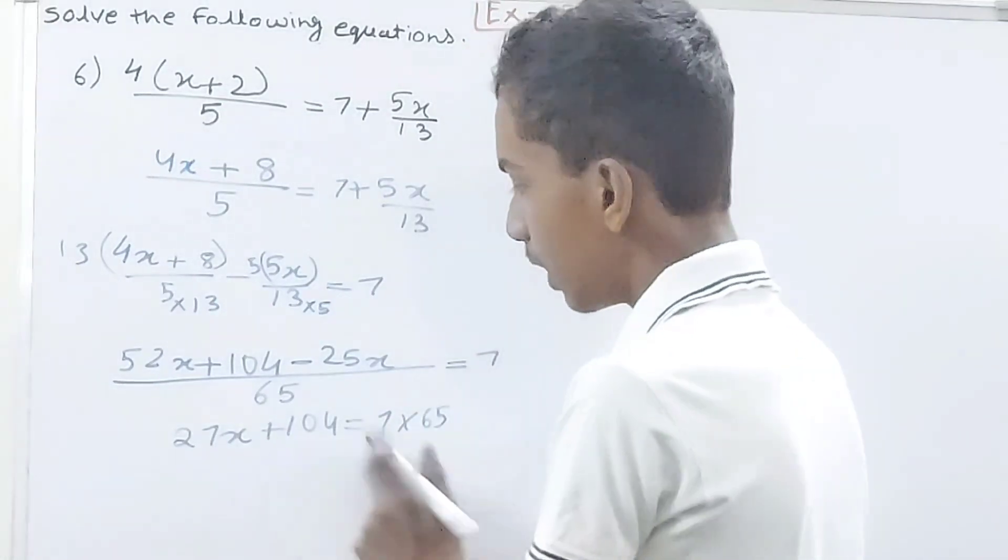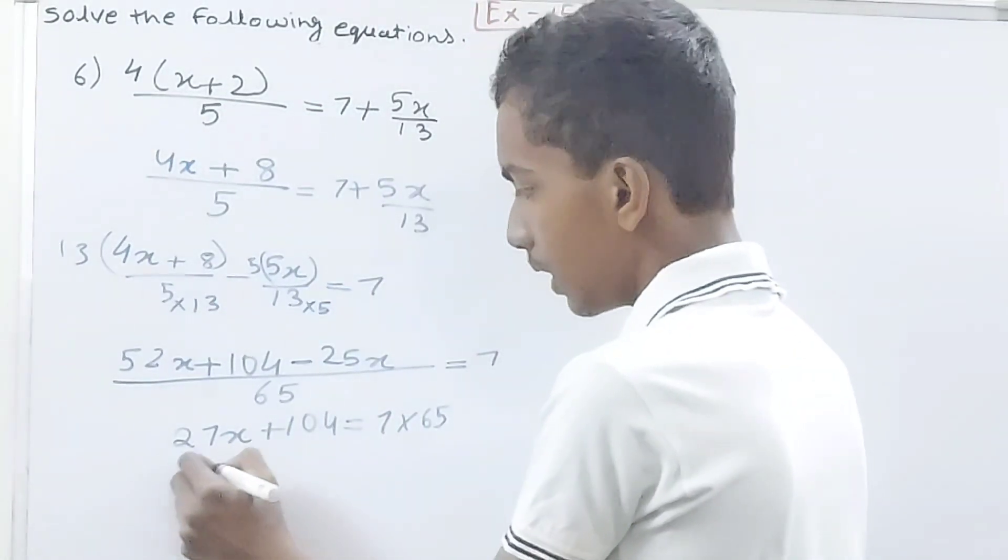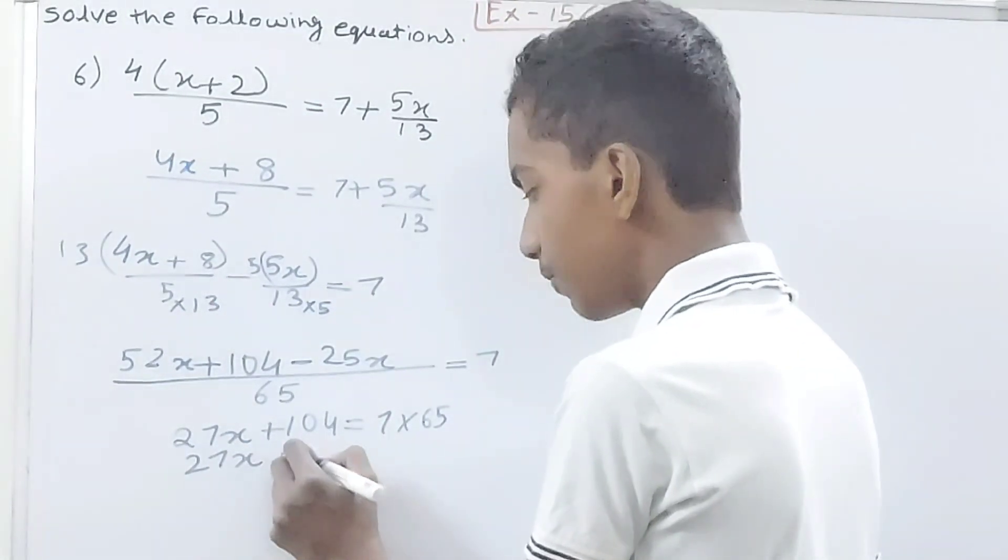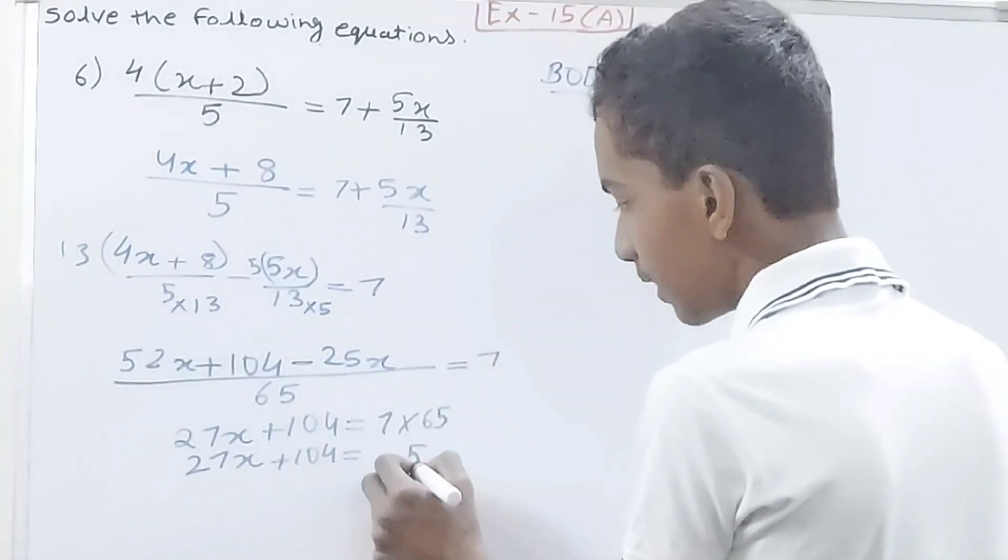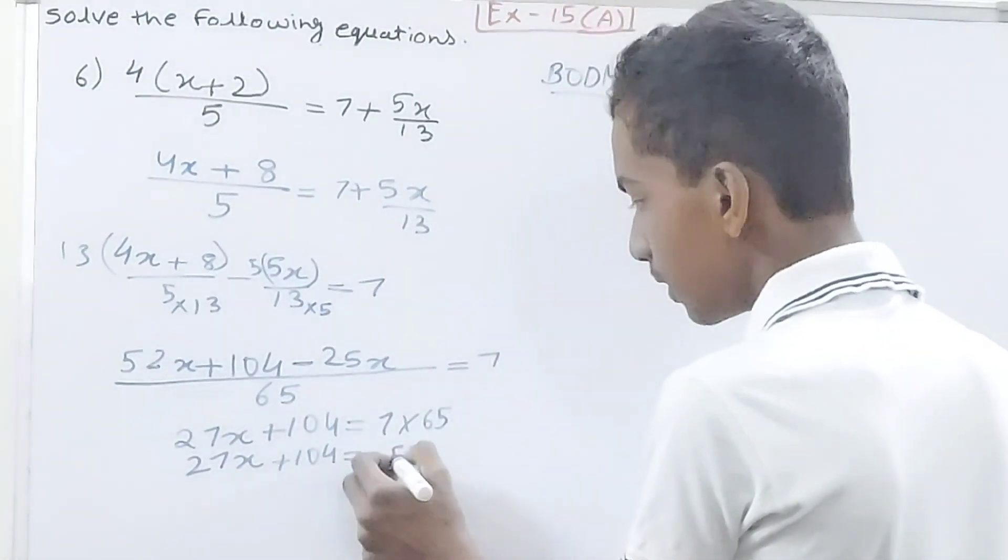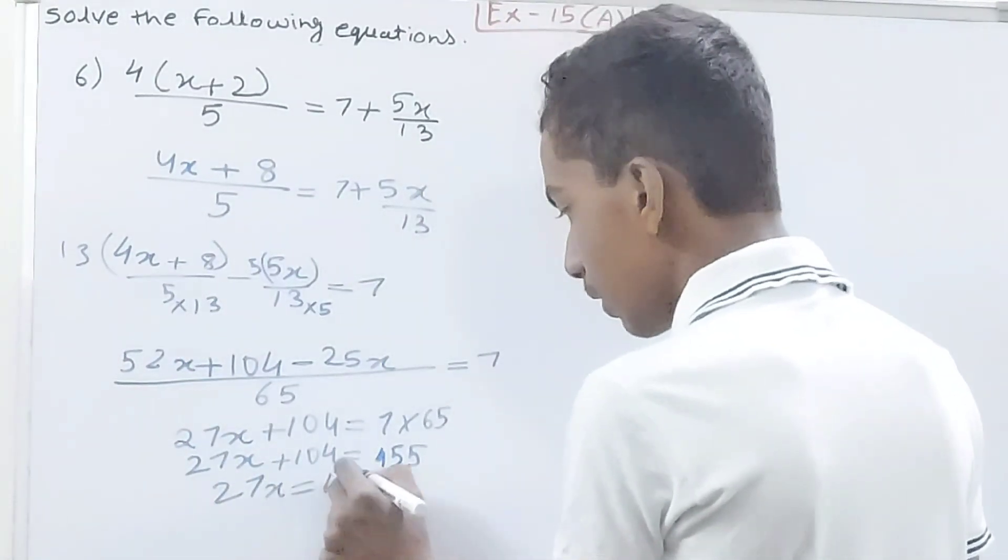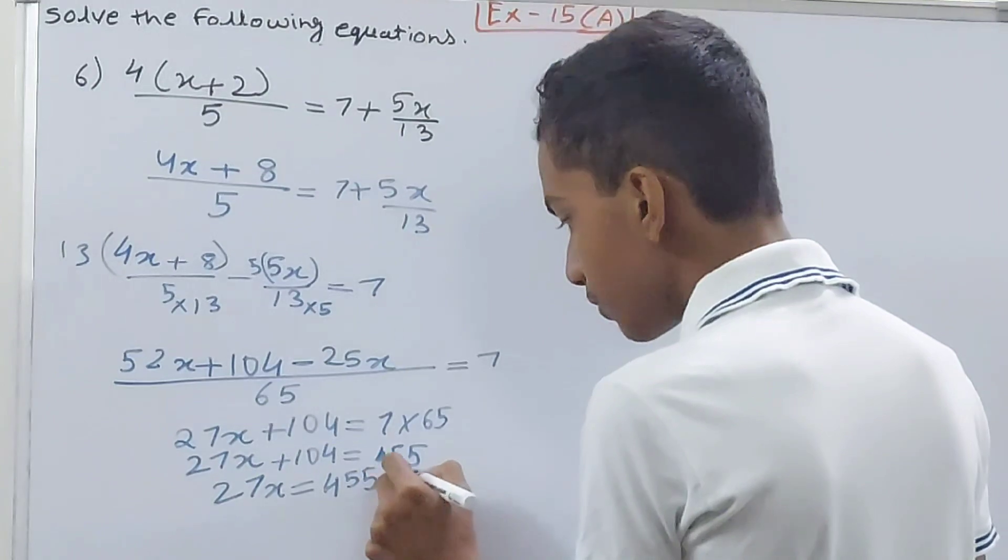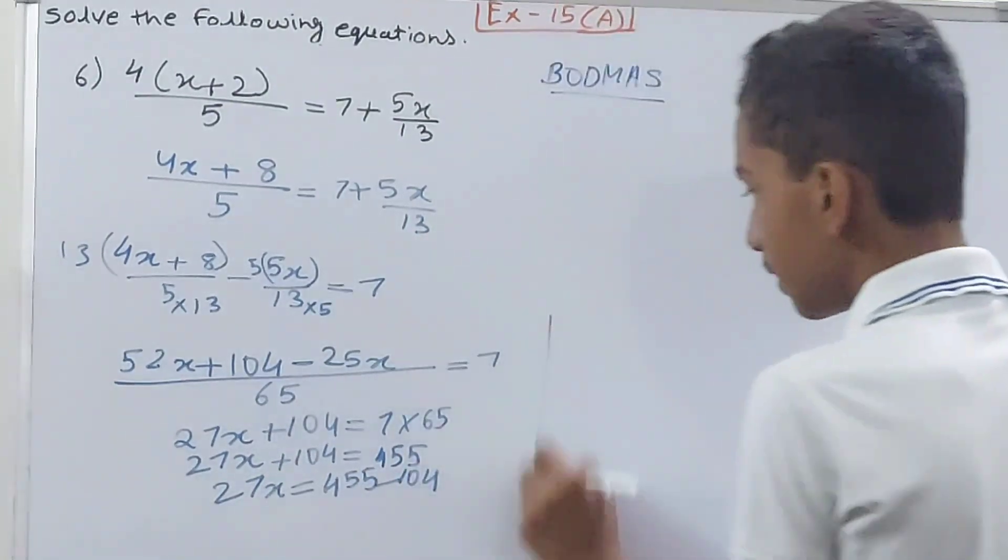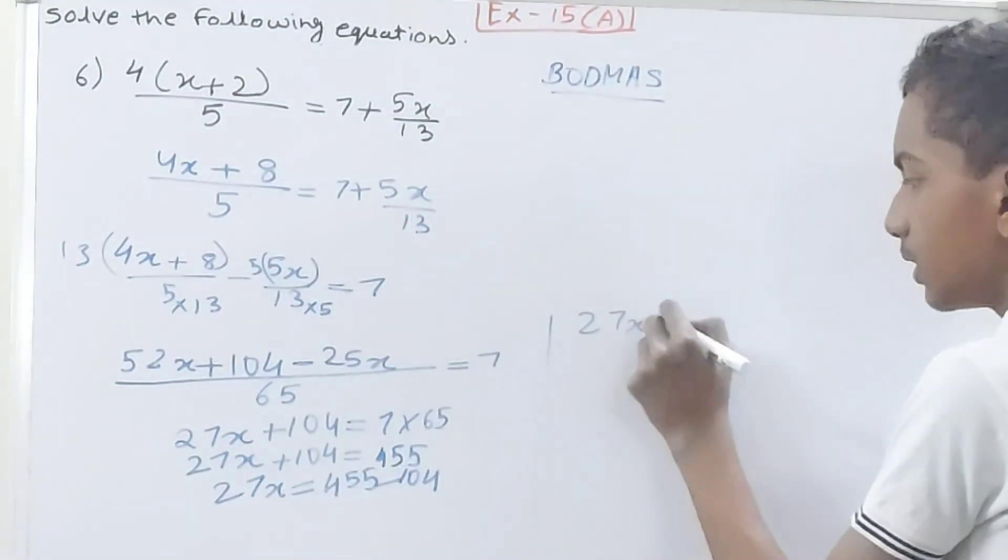Now I will have, see, 27x plus 104 is equal to 7 times 5 is 35 and 7 times 6 is 42 and 3, so 455. So 27x is equal to 455 minus 104. 27x equals to 351.